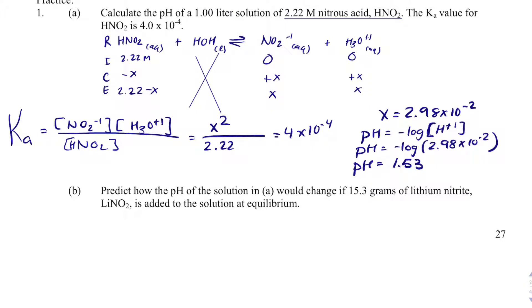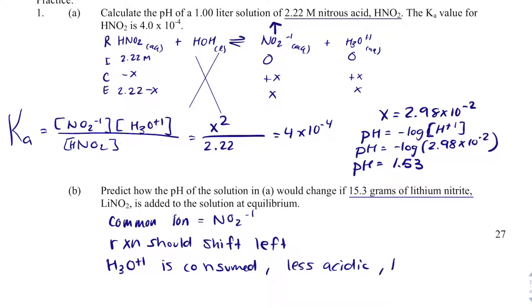Part B says, we have this pH and this solution. What's going to happen if I add lithium nitrite to it? So what is the common ion? The common ion, if I look, I don't have any lithium in my reaction up here, but I do have nitrite. So nitrite is my common ion. So if that increases, the reaction should shift left. H3O+ is consumed in that process. And when H3O+ is decreased, we are less acidic and pH increases.